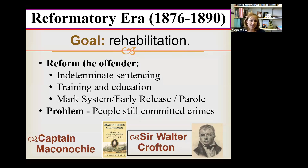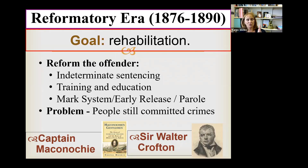The two main figures were Captain Macanoche and Sir Walter Crofton. They believed in creating a system of rewards for inmates: if you do what you're supposed to and can be reformed, you can be allowed to leave the prison system early. They created a system of marks — if you do the right things, you earn merits and work toward earlier release and possibly parole. They also advocated for indeterminate sentencing, which gives inmates a goal and purpose to pursue training, education, and programs.